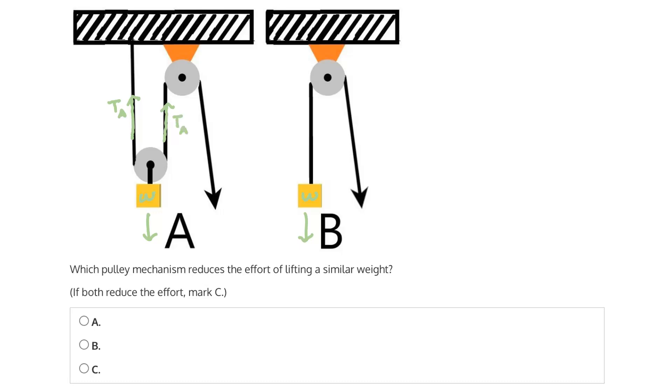But because there are two ropes, the tension will be divided across them. Therefore, the amount of force required will be equal to W divided by 2, where W equals 2 times TA, because we have two tension components.